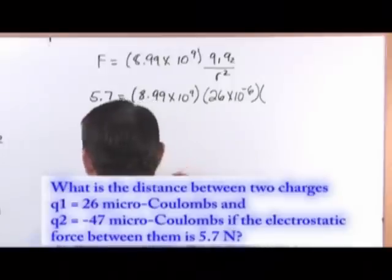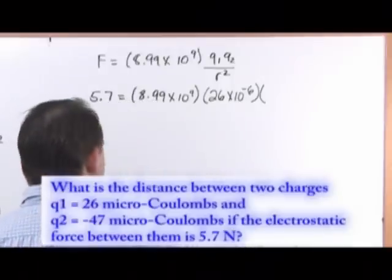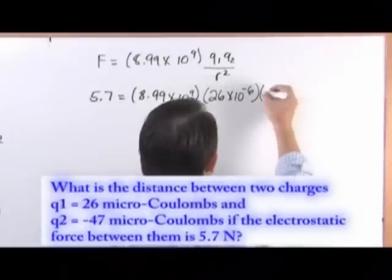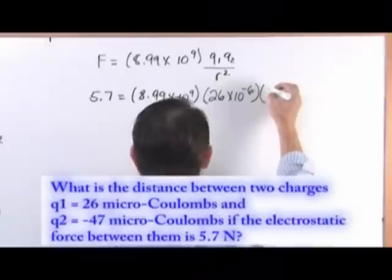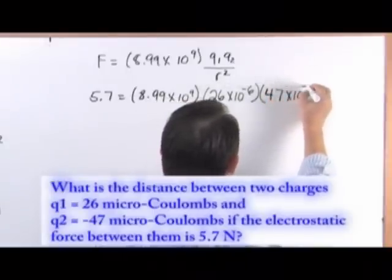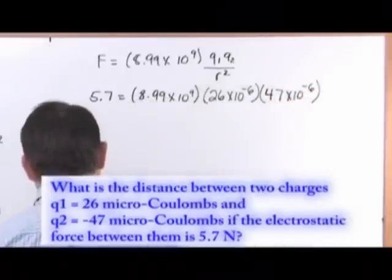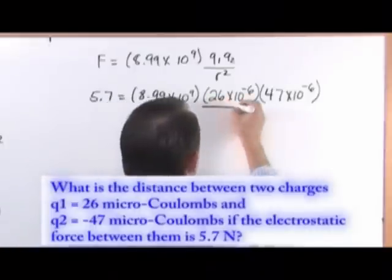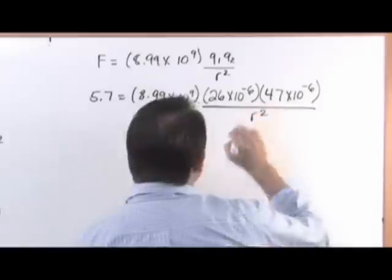Q2 is negative 47 microcoulombs. Now remember, when I use Coulomb's Law, I'm generally not going to put my negative signs in here. It just makes it easier for me to think about. So 47 times 10 to the minus 6 coulombs. And over the bottom, I'm just going to put R squared, because that's what I'm trying to calculate.